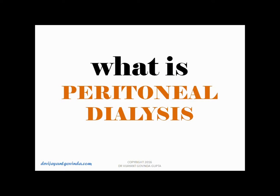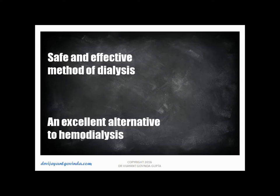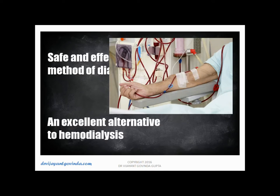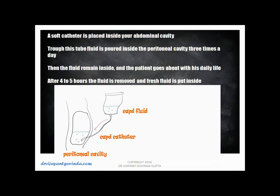What is peritoneal dialysis? Peritoneal dialysis is a safe and effective method of dialysis and an excellent alternative to hemodialysis. A soft catheter is placed inside your abdominal cavity. Through this tube, fluid is poured inside the peritoneal cavity three times a day. The fluid remains inside and the patient goes about daily life. After four to five hours, the fluid is removed and fresh fluid is put inside.